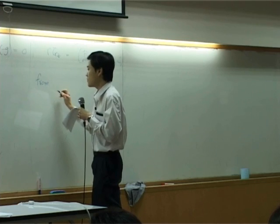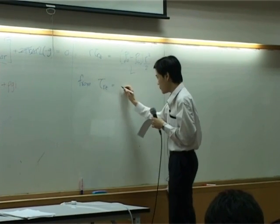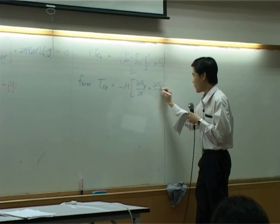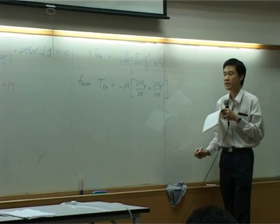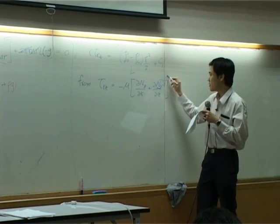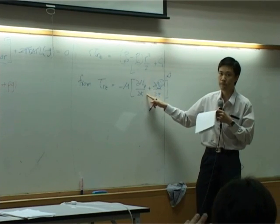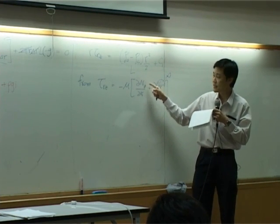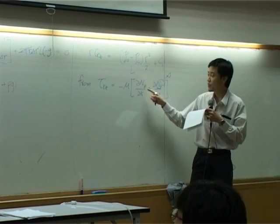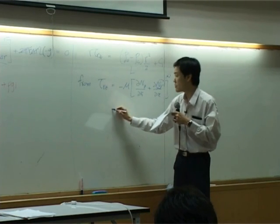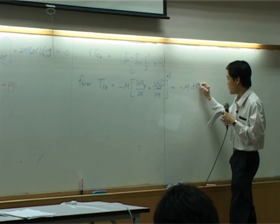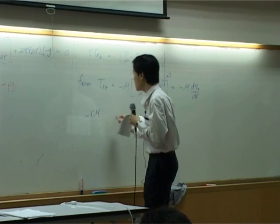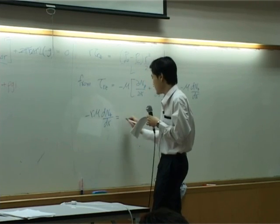We know that according to Newton's law, tau rz equal to minus mu dvz by dr plus dvr by dz. This is Newton's law. The term vr is 0. So there is vz only. And for this part, since we have only vz, and since vz is function of r only, so we don't need to put partial differential anymore. So it becomes minus mu dvz by dr. Just plug it back in our initial equation. Minus r mu dvz by dr equal to the rest.